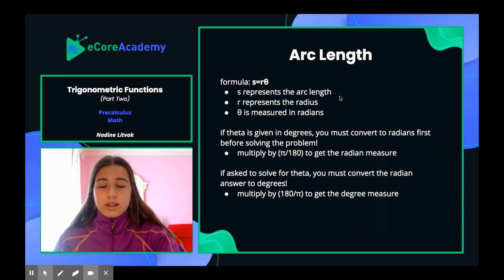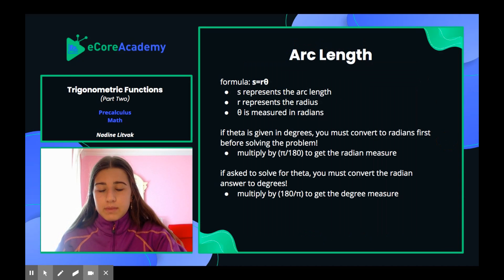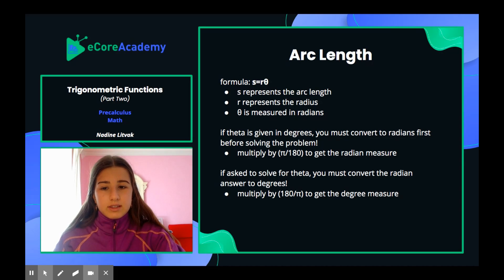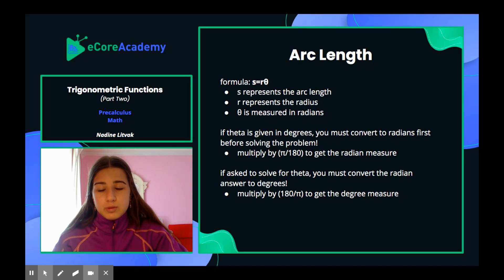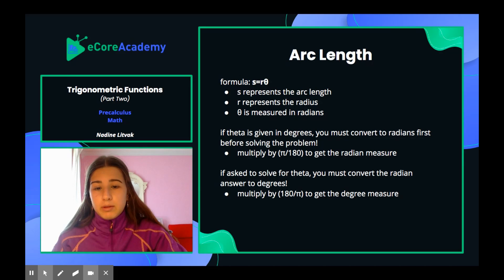The formula for arc length is s equals r theta. S represents the arc length, r represents the radius, and theta is measured in radians. However, you need to be able to go between radians and degrees in order to solve certain problems.